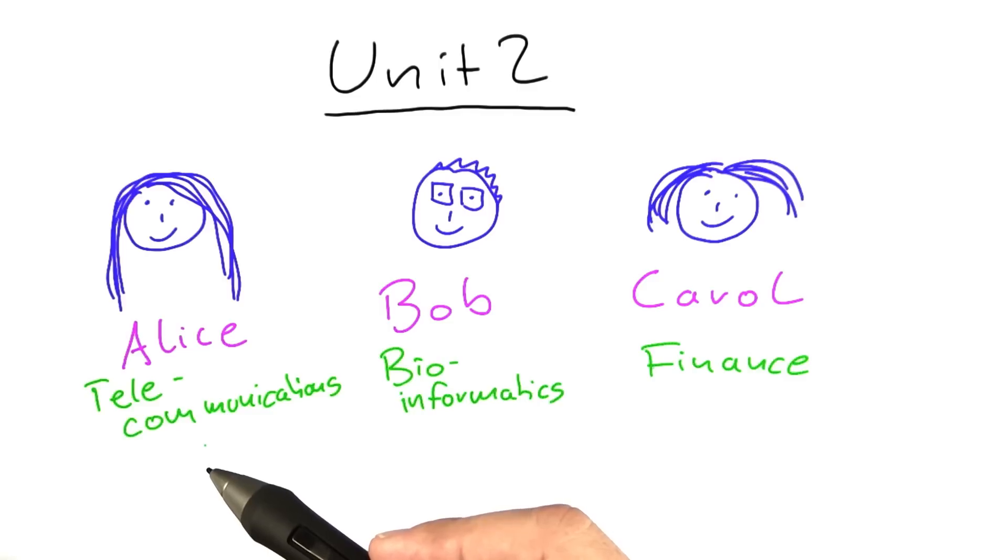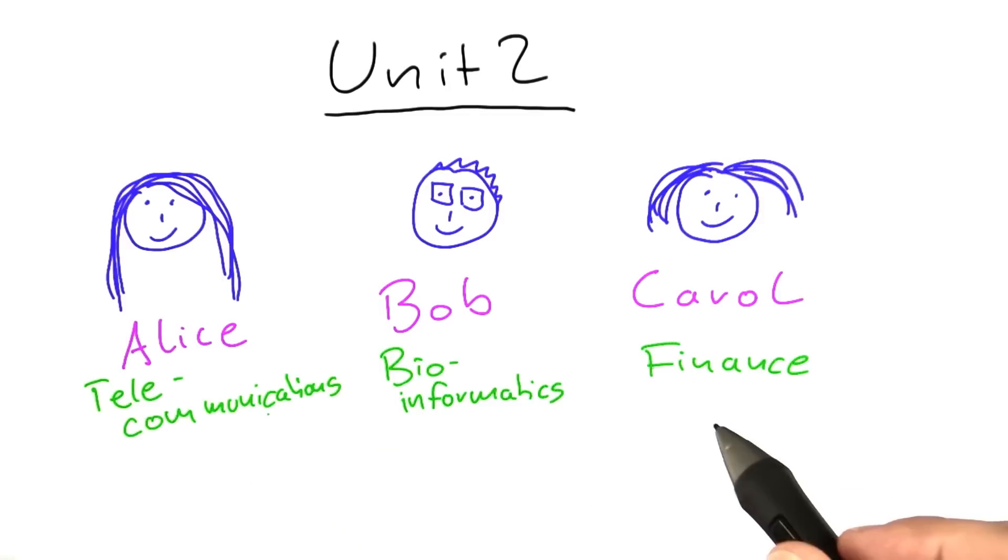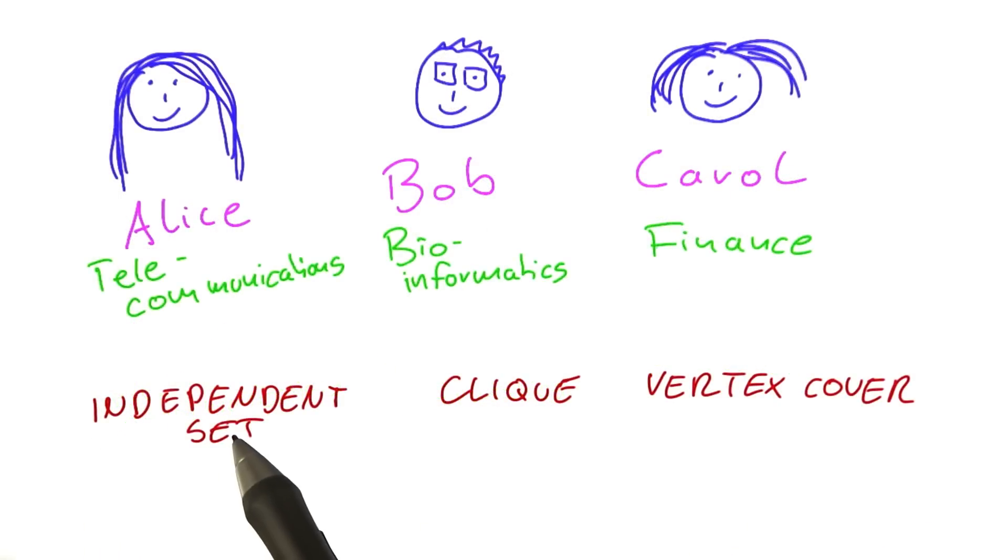Now at the end of the last unit, we stated these problems as problems on graphs. And we're going to do a little recall quiz here to see if you remember which problems they were working on when we state this as a graph problem. The three problems we were looking at were called independent set, clique, and vertex cover.